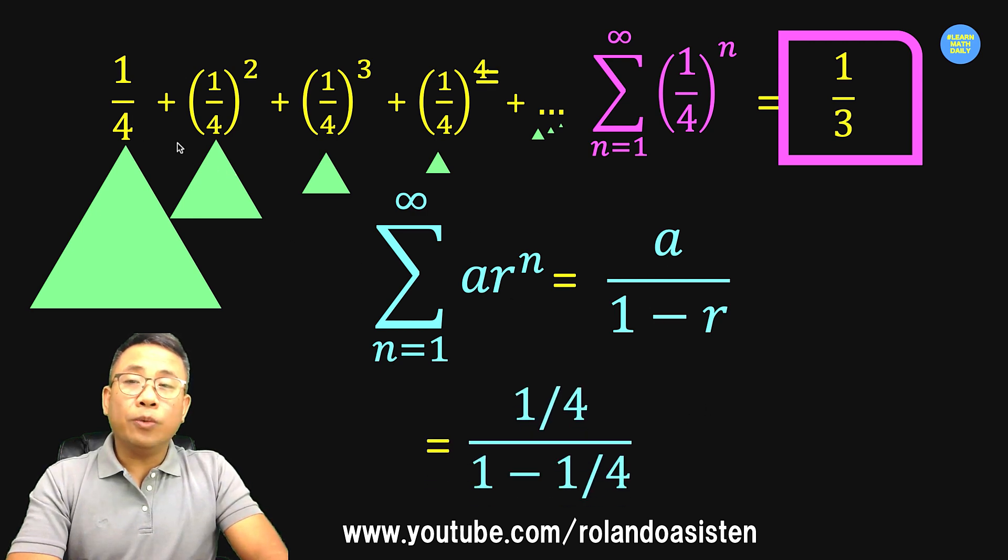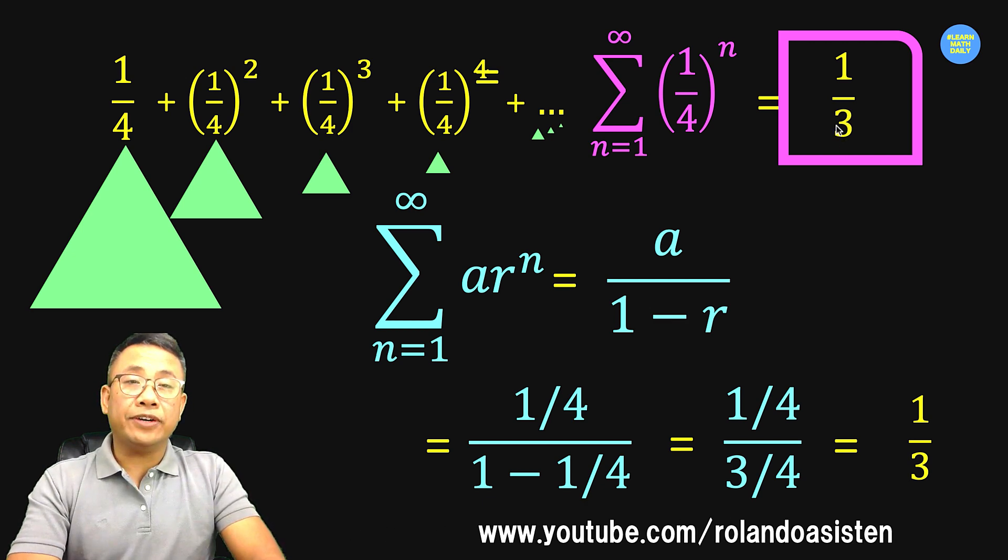Our r is 1/4 because the ratio of 1/4 squared divided by 1/4 is 1/4. The ratio of 1/4 to the 3rd divided by 1/4 squared is also 1/4. So the constant ratio is r. And computing this value, we arrive at 1/4 over 1 minus 1/4 which is 3/4, and that is equal to 1/3 which is the same as what we found out in our visualization.